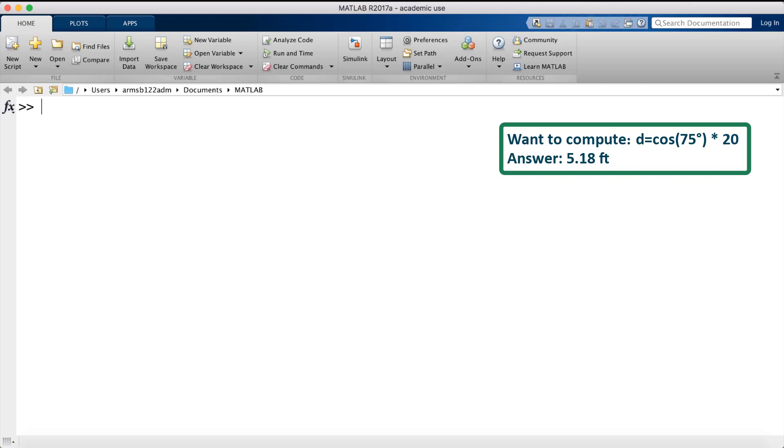The computation we want to perform is to take the cosine of the angle 75 degrees and multiply that by the hypotenuse 20 feet to obtain the distance of the ladder from the wall. Let's type this out in MATLAB: cosine of 75 times 20. Notice I use parentheses around the input argument to the function. I'll push enter.